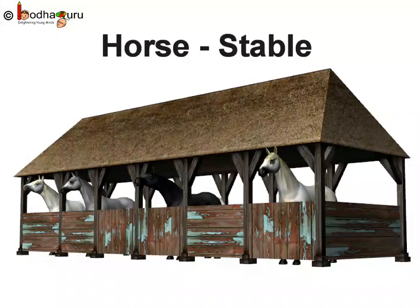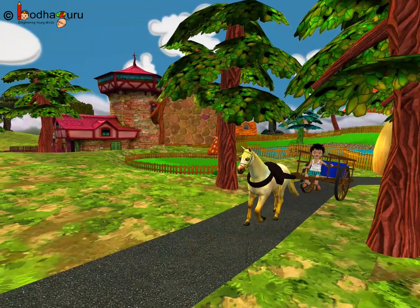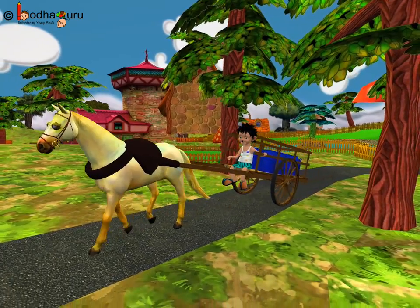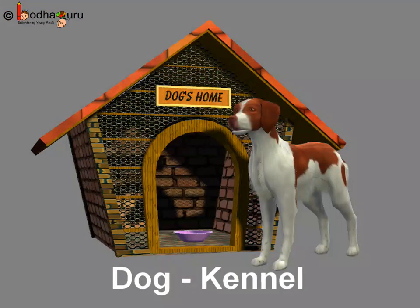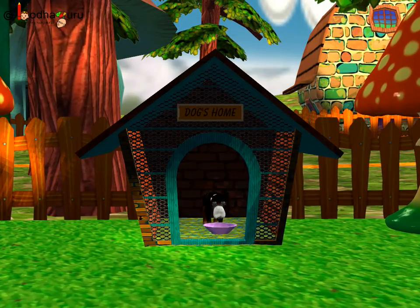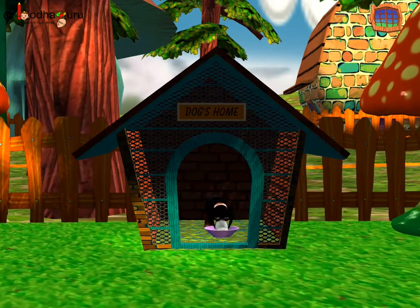The horses are kept in the stable. Like in the story, Mungerilal built a stable for the horse which drew his carriage. The dog's home is called a kennel. Mungerilal built a kennel for his pet dog.